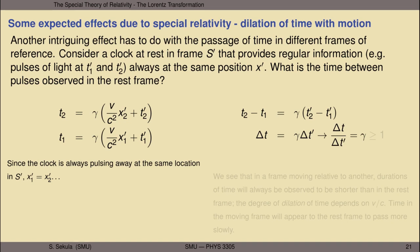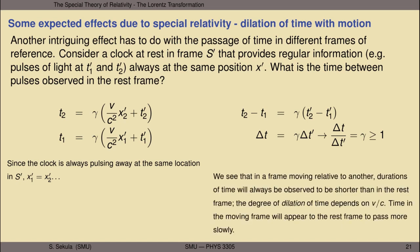So delta t in the rest frame equals gamma times delta t prime in the moving frame. The ratio of these time durations is given by gamma, which equals 1 only when the two frames are at rest with respect to each other. At any relative speed greater than zero, gamma is greater than 1. Therefore, durations of time in a frame moving relative to another will always be observed to be shorter than in the rest frame. The duration observed in the rest frame is greater than that in the moving frame for the same pair of events. Time in the moving frame appears to the rest frame to pass more slowly—this is time dilation.